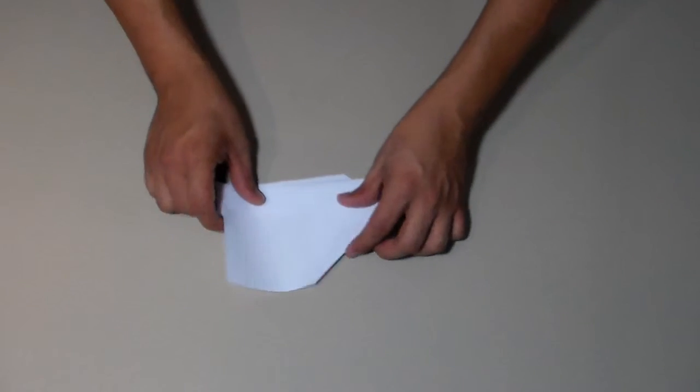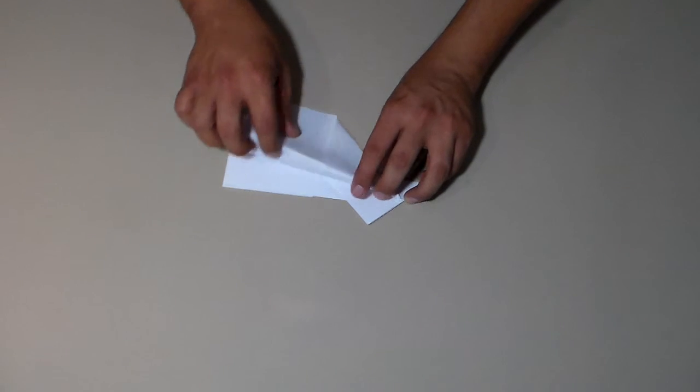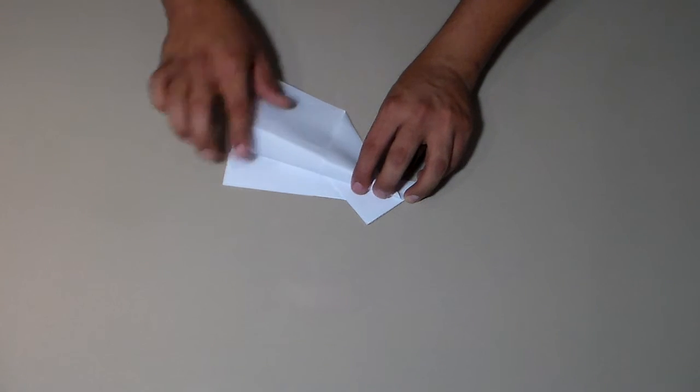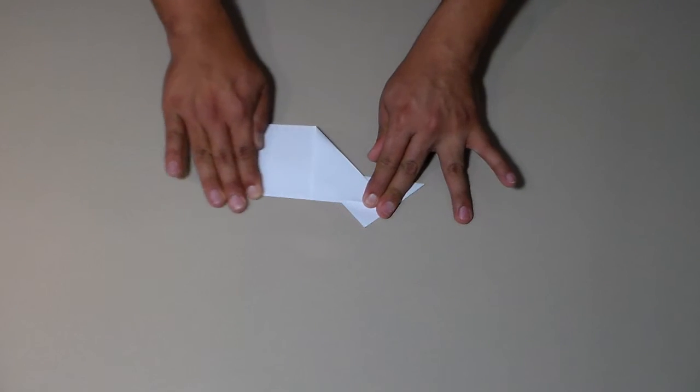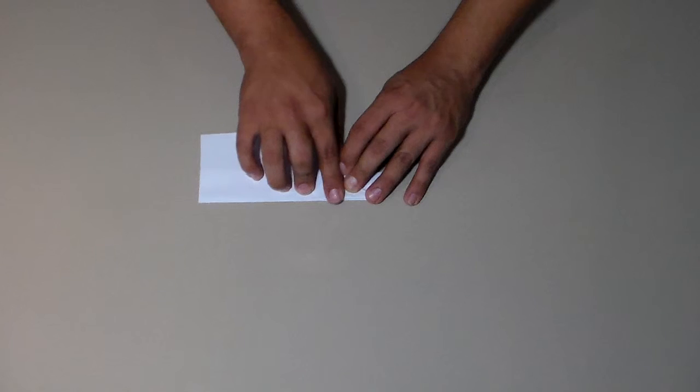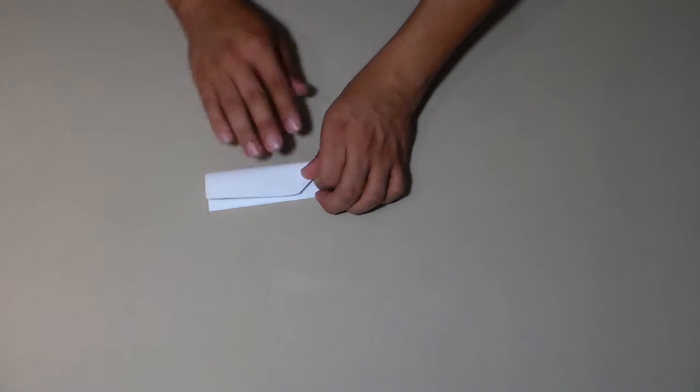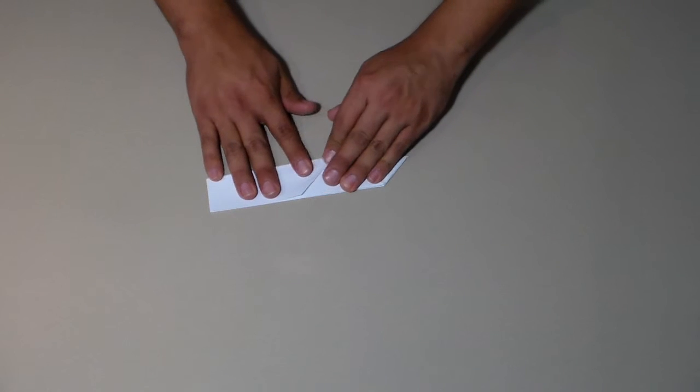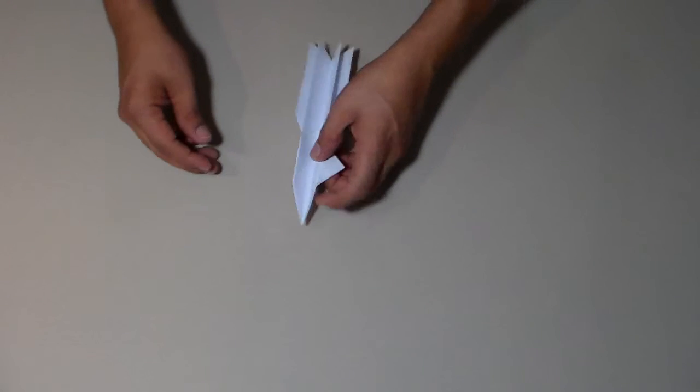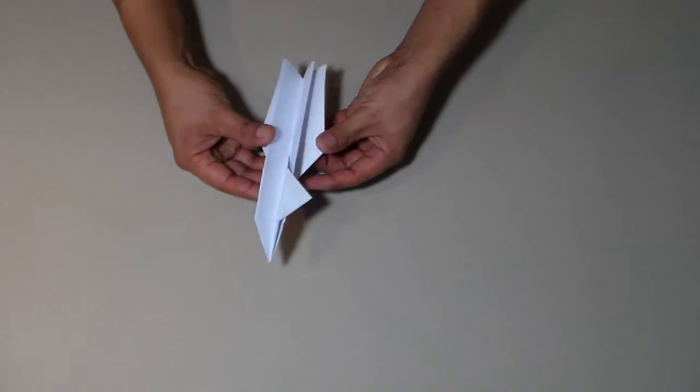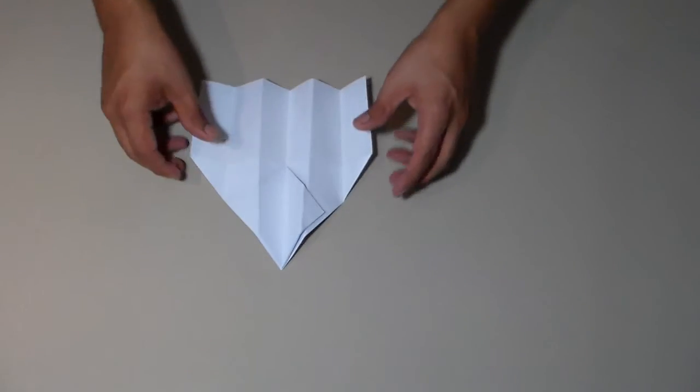Then what you do is you flip it around. Just go about halfway—you've got that line from the other fold that you did previously. Make about the same, go across that way, get that little tip, fold it back this way, and then fold that that way there. Then after that, you open it up and you got a plane.